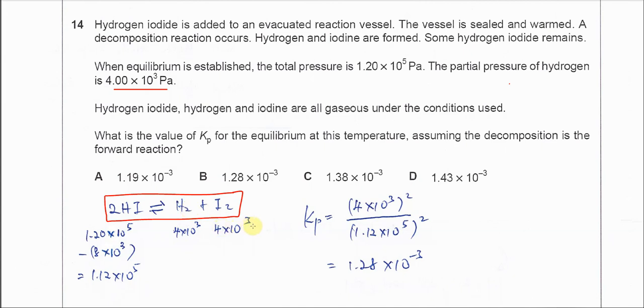So the partial pressure of I2 is the same as H2, and in order to get the KP, we must get all the partial pressures in the gas mixture.